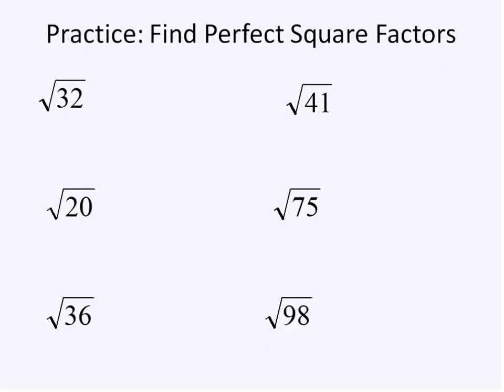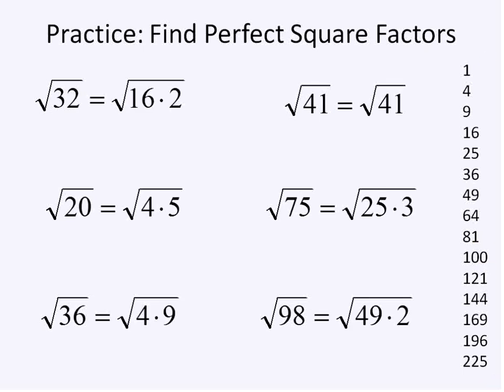Now we're going to practice finding perfect squares. So at this point you'll pause the video and try and find perfect square factors of these six square roots that we have here. After you've practiced, hopefully you were able to use our list over here to find some perfect square factors. 32 is 16 times 2. 16 is our perfect square factor of 32.